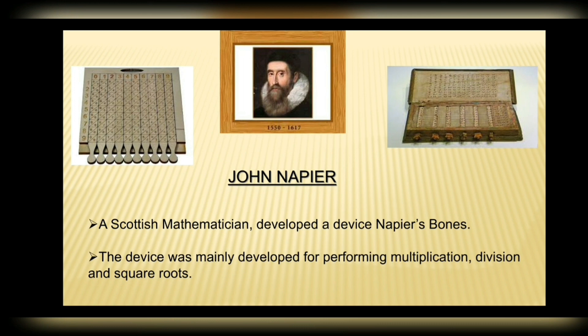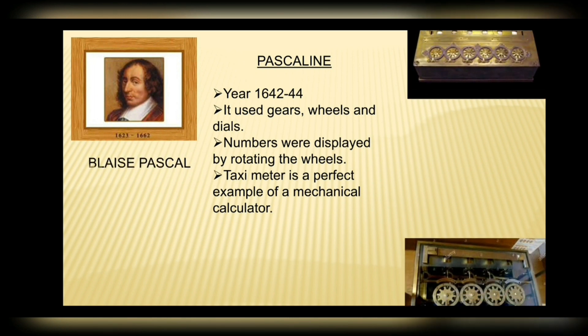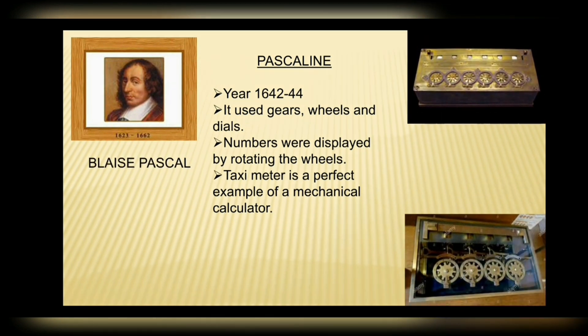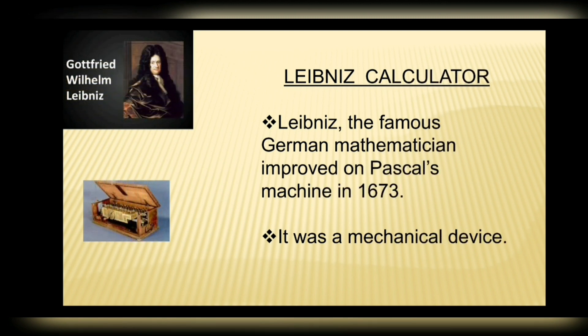Number three: Pascaline — Blaise Pascal in the year 1642–44 invented a machine called the Pascaline. It used gears, wheels, and dials; numbers were displayed by rotating the wheels — a taximeter is a perfect example. Number four: Leibniz — the famous German mathematician improved on Pascal's machine in 1673 with a mechanical device.